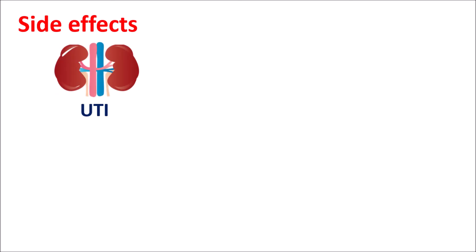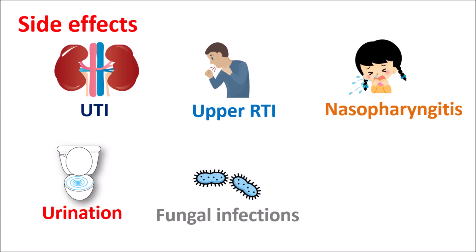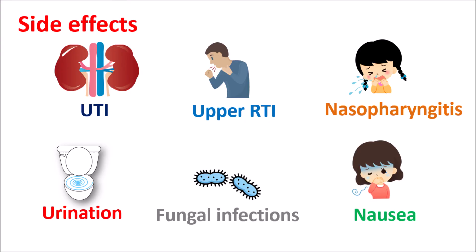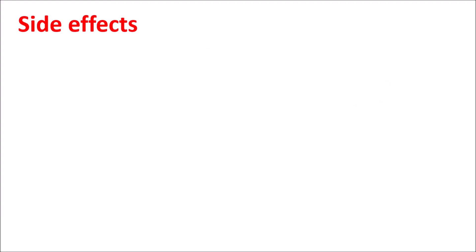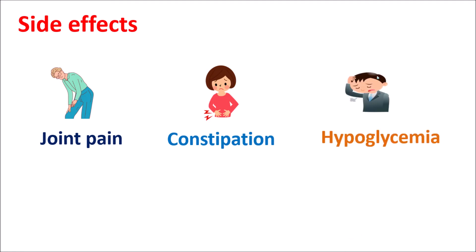Now let us see the side effects of empagliflozin. One important side effect is urinary tract infections. It can also produce upper respiratory tract infections resulting in nasopharyngitis, as well as increased urination due to increased diuresis. It can also produce fungal infections, nausea and vomiting. Other side effects include joint pain, constipation, and hypoglycemia.